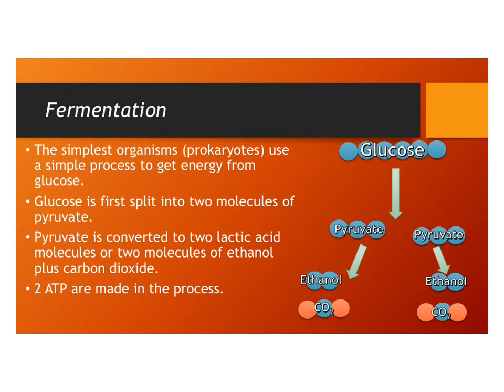The simplest way that cells get energy from glucose is called fermentation. Fermentation is done by many unicellular organisms and some multicellular organisms, but mainly we're talking about prokaryotes — bacterial cells. This simple process takes glucose, which has six carbons. The first step splits glucose into two molecules of something called pyruvate, each with three carbons. This process is called glycolysis, which we'll talk about in more detail shortly.